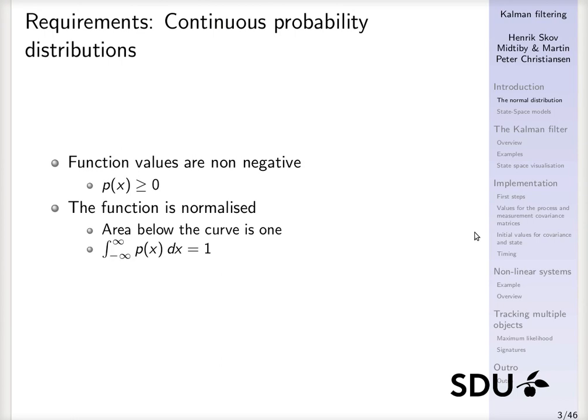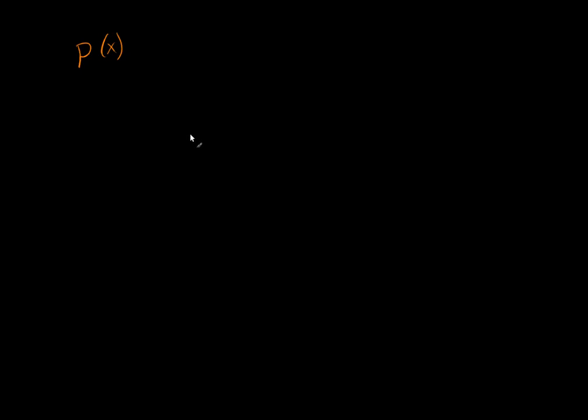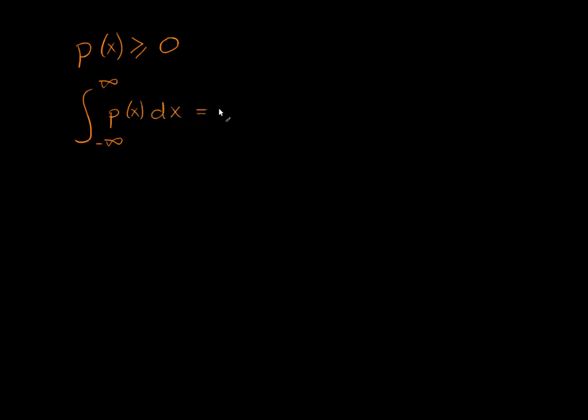Before we get started, we should have some basic things in place — like what is a continuous probability distribution and what are the requirements for such a distribution. If we have a function p(x), it must have two properties to be a probability density function. One property is that it should be non-negative, so all values of the function should be zero or larger. The second property is that the integral over the entire range of x values — the area below the curve — should be exactly one.